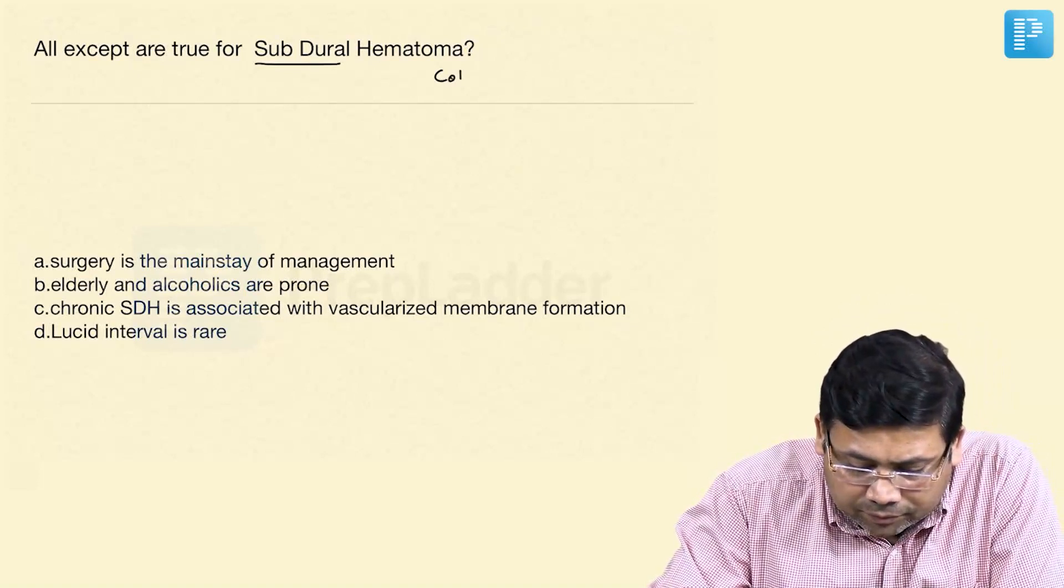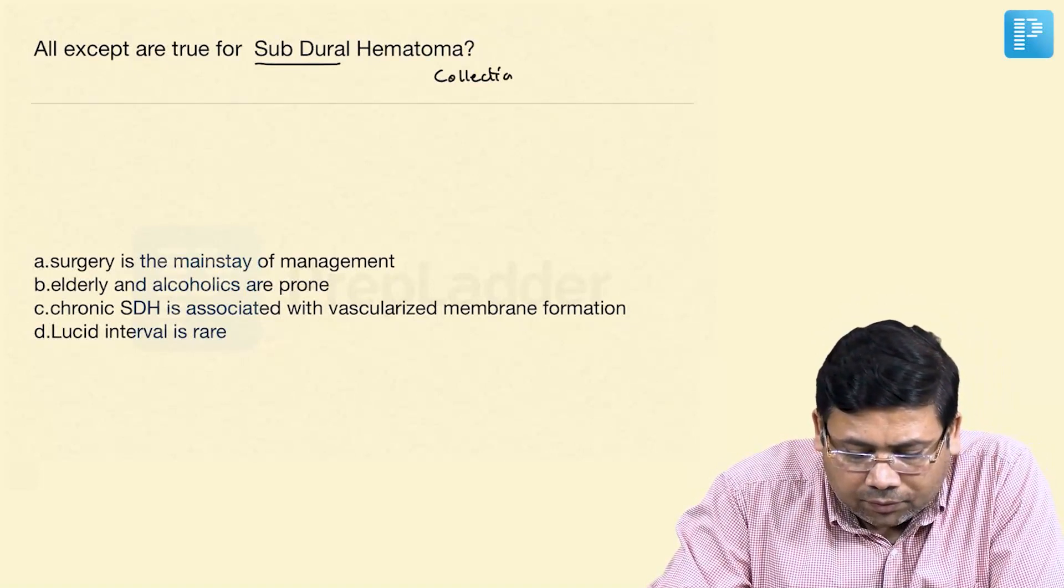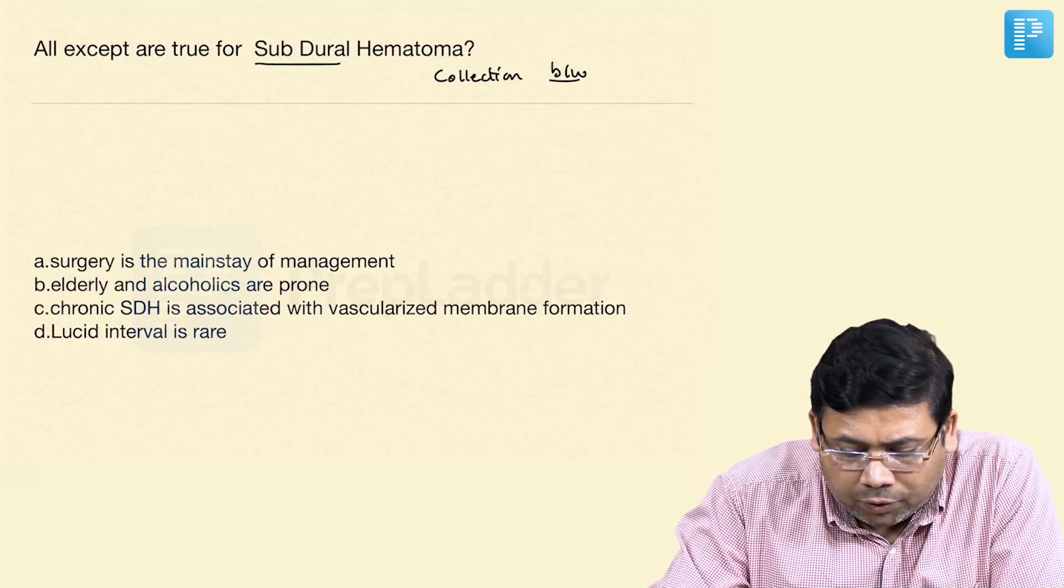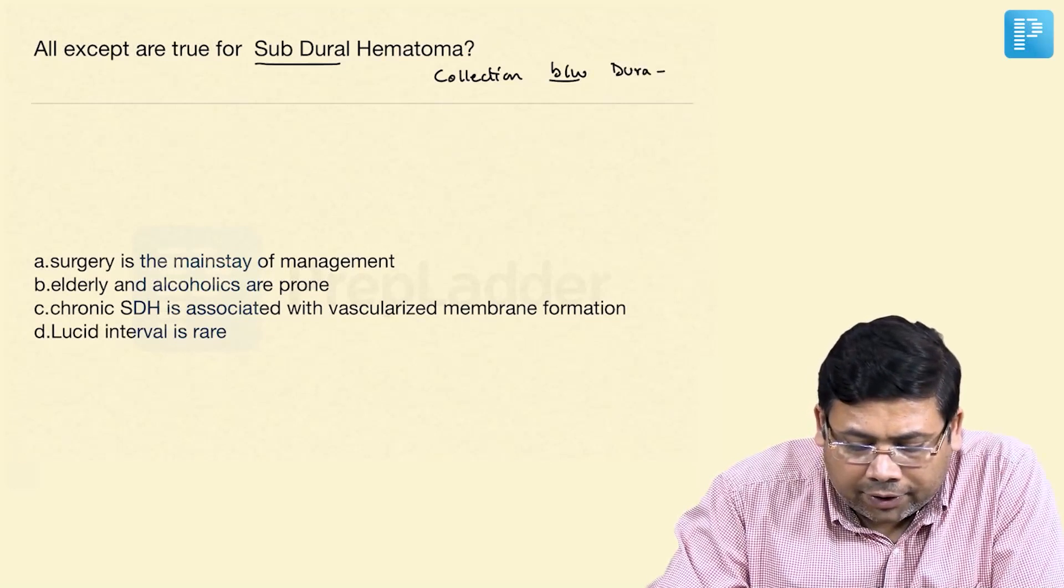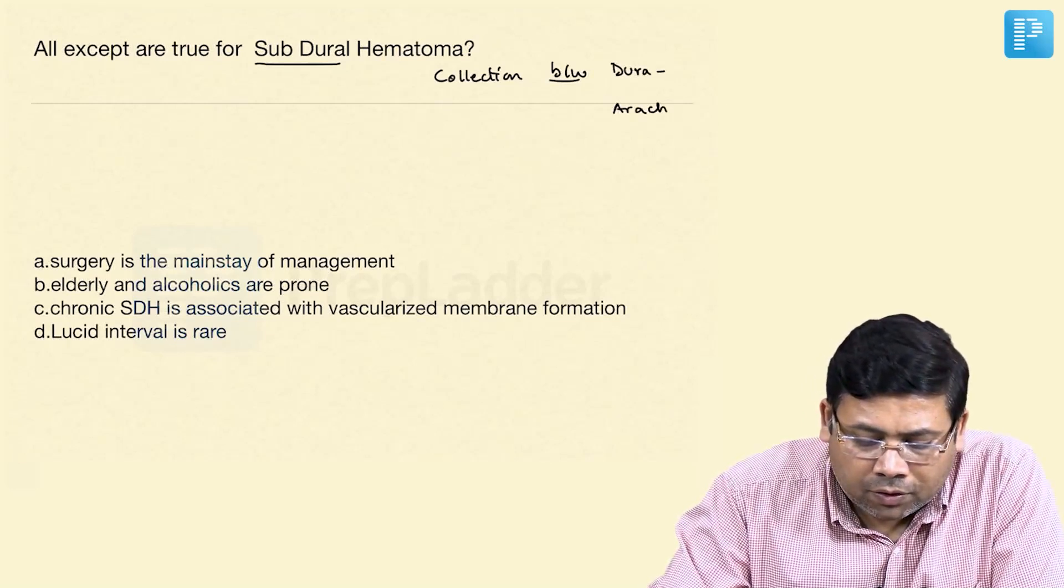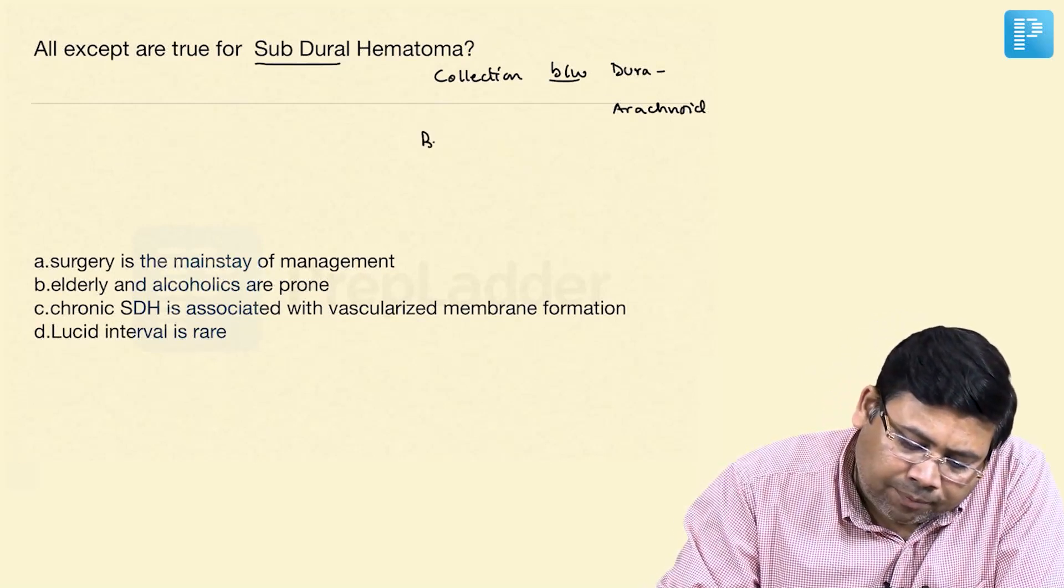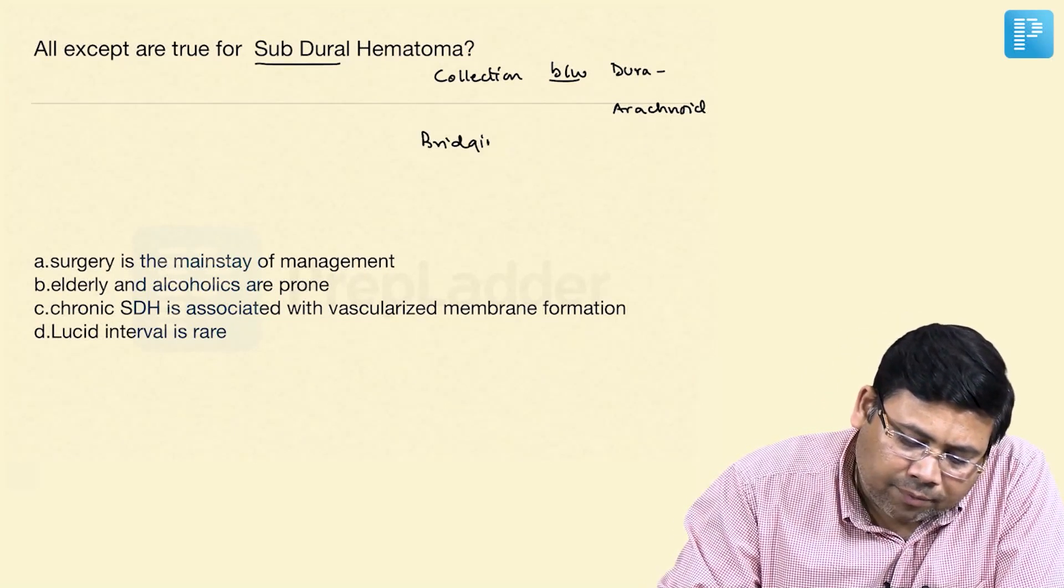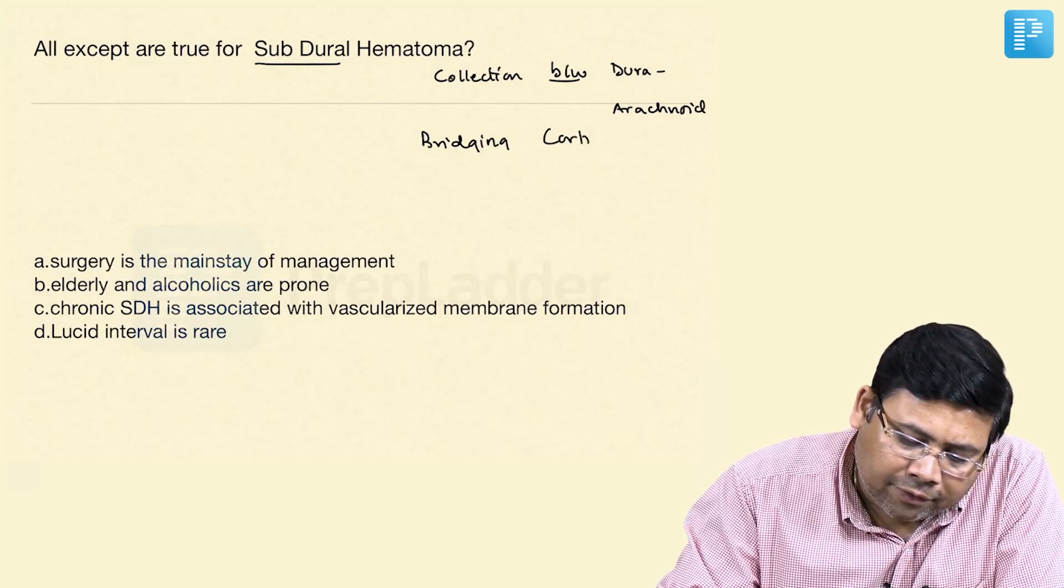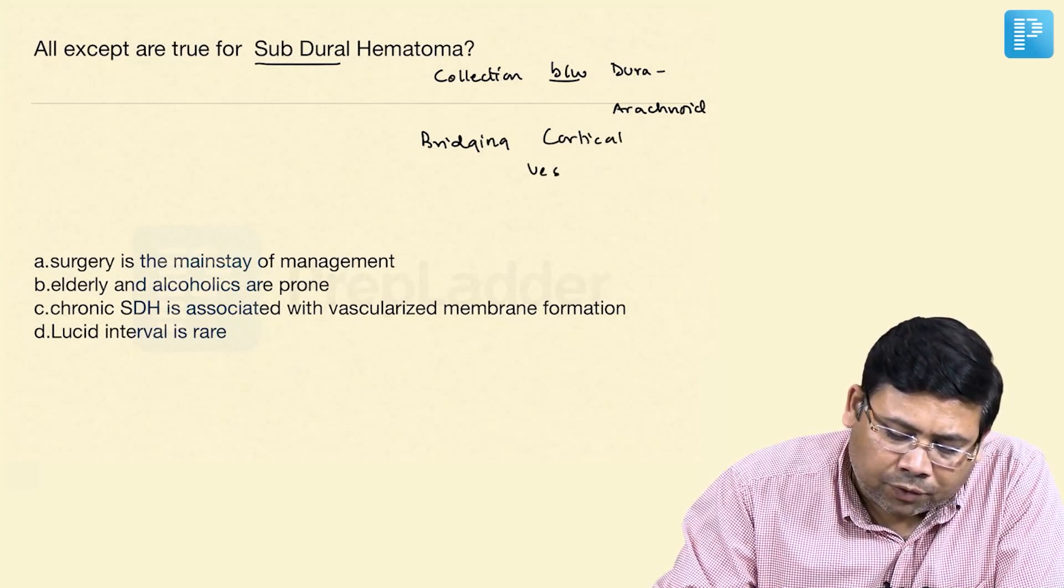It is the collection between the dura and arachnoid. You have to understand it is the damage to the bridging cortical vessels which are responsible here.